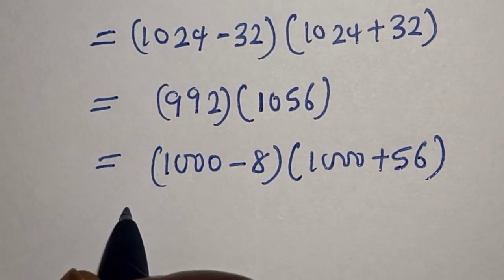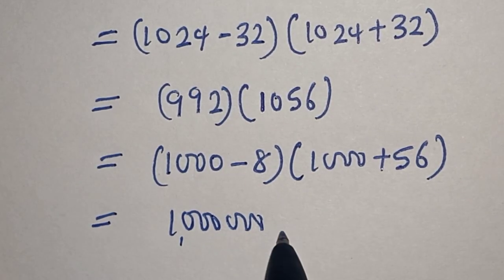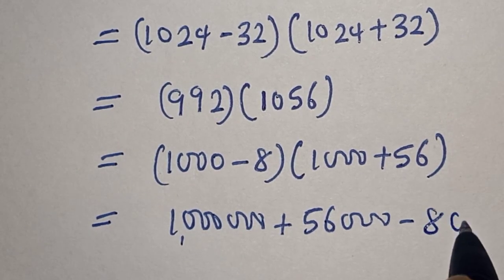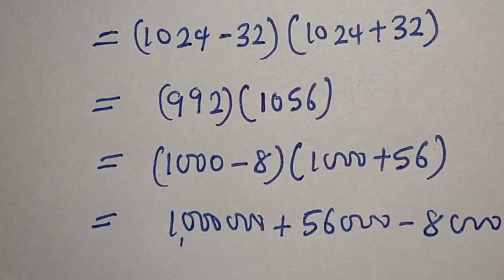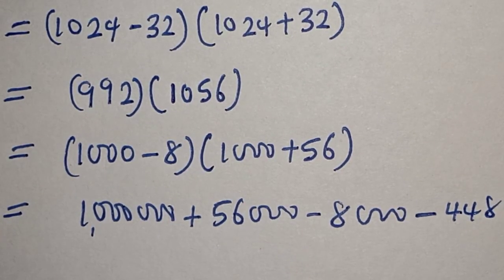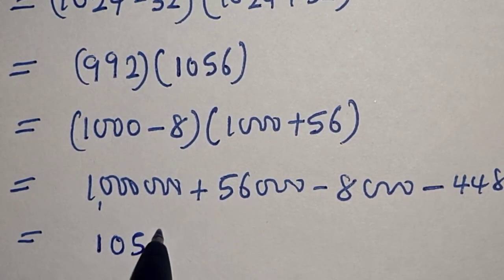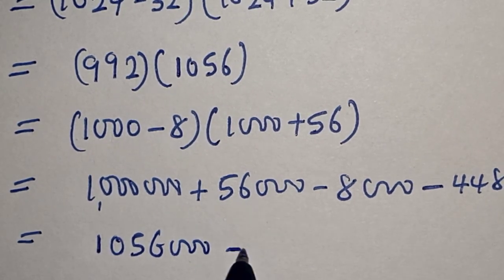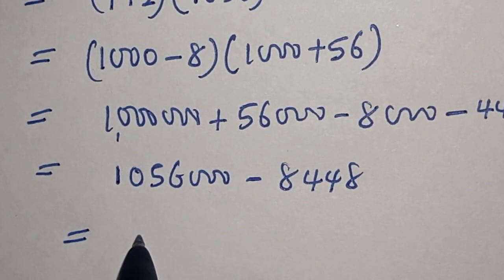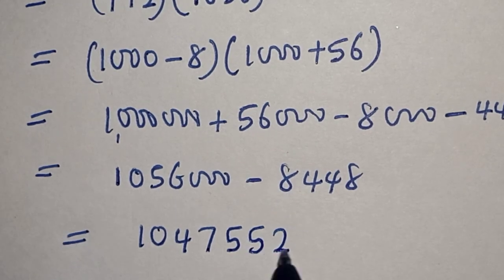If you open this, you get 1 million plus 56 thousand minus 8 thousand minus 448. This equals 1,056,000 minus 8,448, which gives us 1,047,552. And that is our final answer.